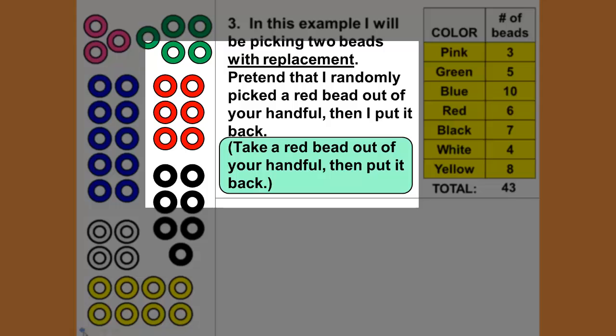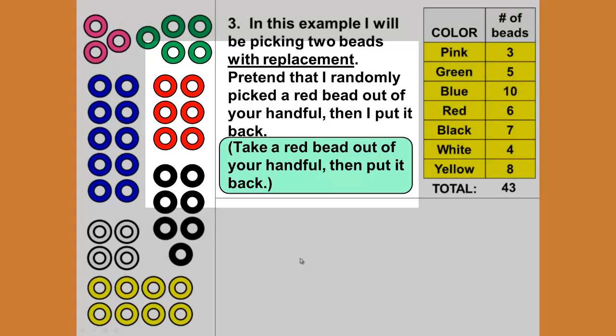Now I'm going to go back and I want you to watch that animation again. You're taking the red bead, taking it out, and then putting it back. One more time because I love how she did the animation. You picked it but then you put it back in your sample space. This is with replacement—you replaced the bead back into the sample space.